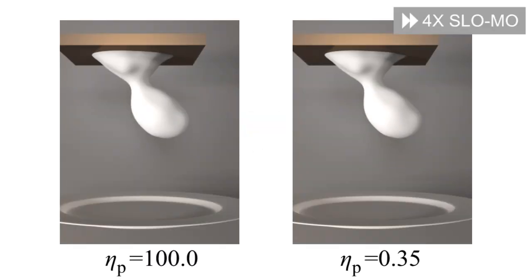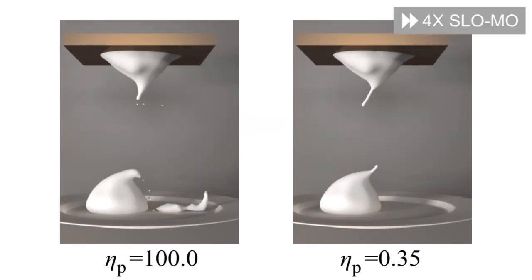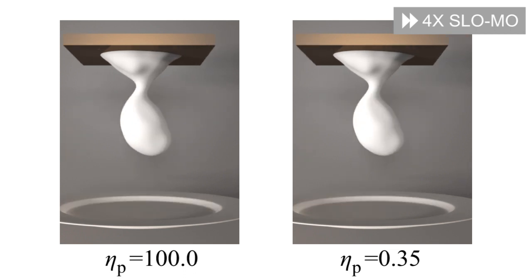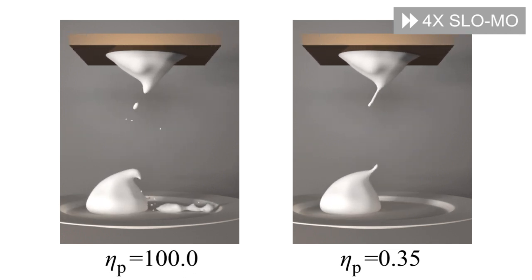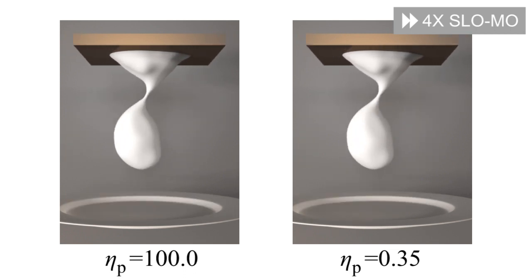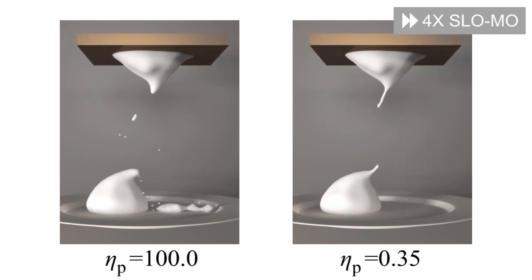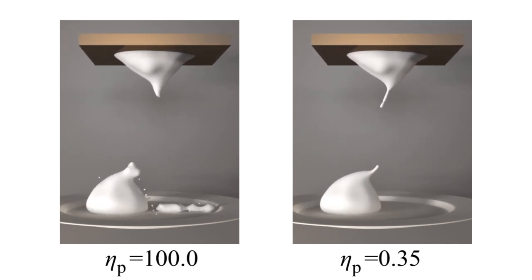Next, we compare the effects of plastic recovery. If we set a large value for plastic relaxation, the foam exhibits a brittle appearance. With a smaller plastic relaxation value, we obtain a more sticky tearing effect.